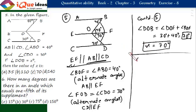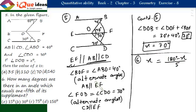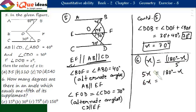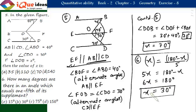Question number 6: how many degrees are there in an angle which equals one-fifth of its supplement? Let the angle be x, so its supplement is 180 degrees minus x. The equation is x equals one-fifth of (180 minus x). Cross-multiplying gives 5x equals 180 minus x, so 6x equals 180 degrees, meaning x equals 30 degrees. We can verify: 30 degrees is one-fifth of 150 degrees. So the required angle is 30 degrees.